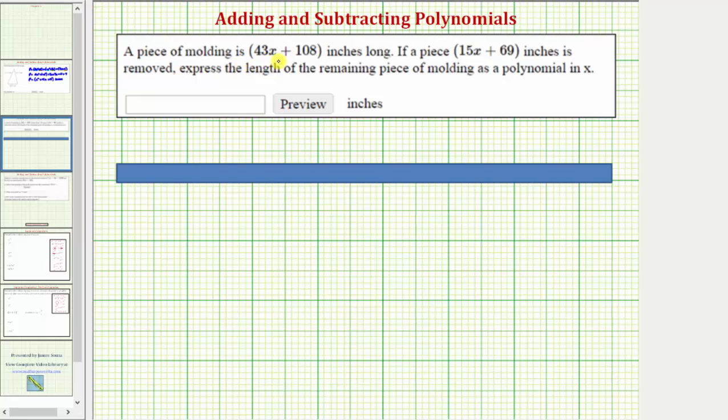A piece of molding is the quantity 43x plus 108 inches long. If a piece the quantity 15x plus 69 inches is removed, express the length of the remaining piece of molding as a polynomial in terms of x.